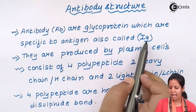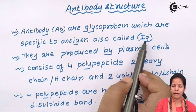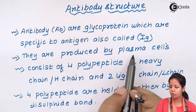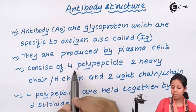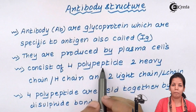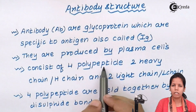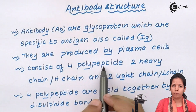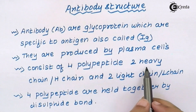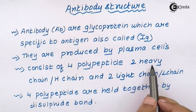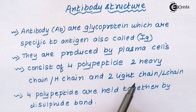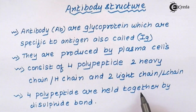Antibodies are also termed as Ig or immunoglobulins. They are basically produced by plasma cells of our body. They consist of 4 polypeptides — and since they are made up of proteins, when a chain of proteins is joined together, the bond formed is a peptide bond, consisting of NH2 and COOH, that is amine and carboxylic groups. These polypeptides have 2 heavy chains, termed as H chains, and 2 light chains, termed as L chains. These 4 polypeptides are held together and joined by disulfide bonds or SS bonds.